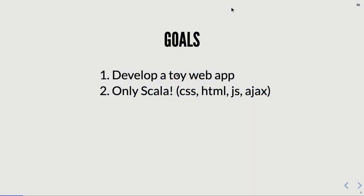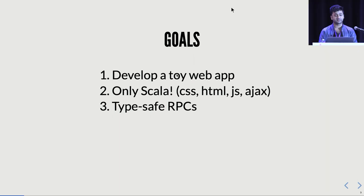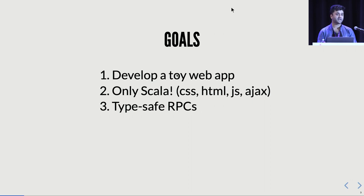The goals of this talk: we're going to develop a toy web application using only Scala for CSS, HTML, JavaScript, and AJAX. We'll have type-safe RPCs — the communication between the backend and the frontend. Your AJAX calls would be type-safe, which means if you remove or change the signature of a backend API, your frontend cannot make the AJAX call — it would be a compiler error.